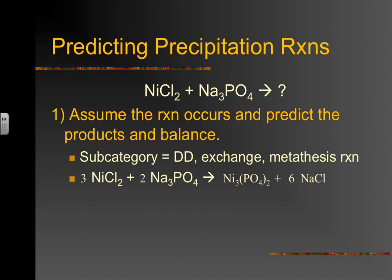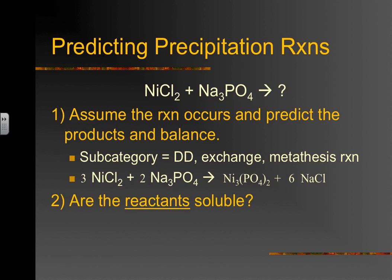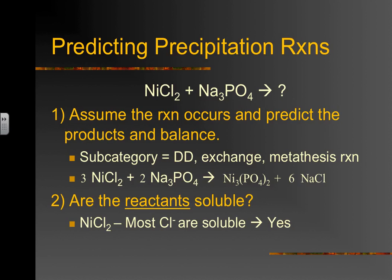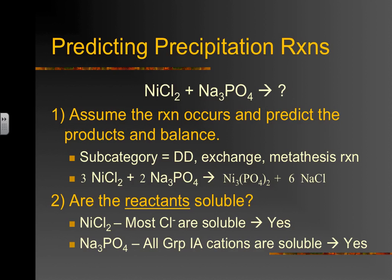Once you have predicted products and the equation balanced, make sure everything's going to be soluble. For nickel(II) chloride, checking the solubility chart under chlorides: most chlorides are soluble, and nickel is not listed as an exception, so nickel(II) chloride is indeed soluble. For sodium phosphate, remember the rule you must have memorized — all Group 1A cations are soluble regardless of what they're paired with, so sodium phosphate is soluble.